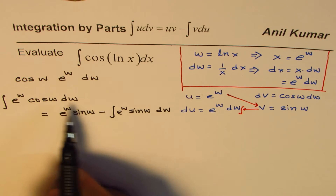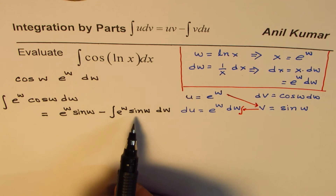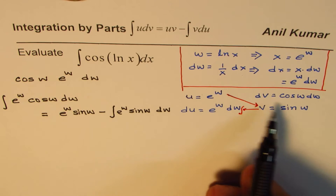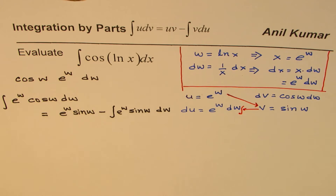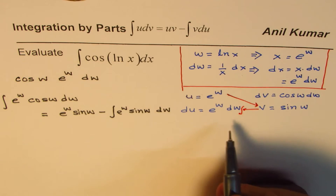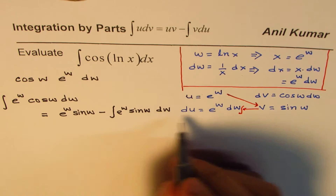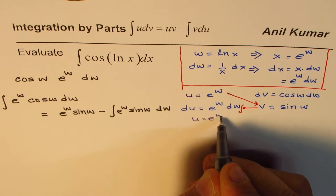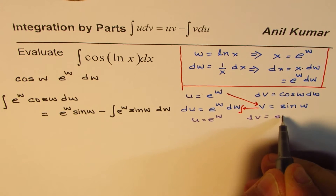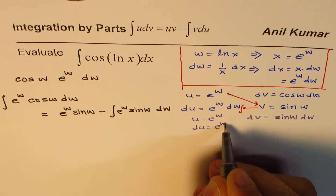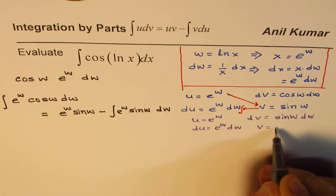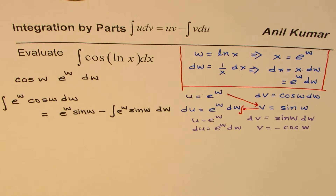Let's apply integration by parts again to ∫e^w sin(w) dw. Let u = e^w and dv = sin(w) dw. Then du = e^w dw, and v = −cos(w).